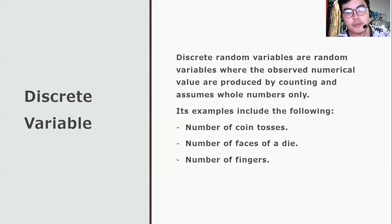How about the number of faces of a die? We have six faces of a die. When we see each face of a die, it contains one, two, three, four, five, six. This contains whole numbers, which make it qualified as a discrete variable.